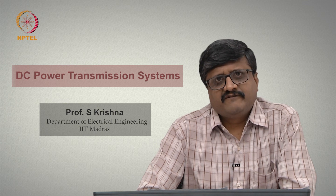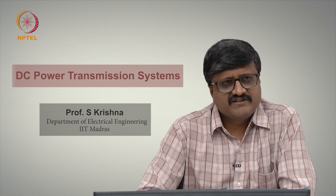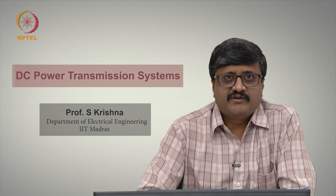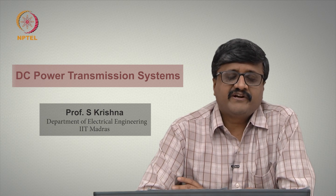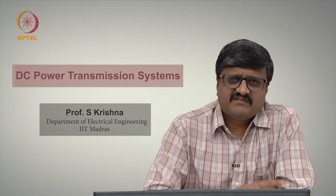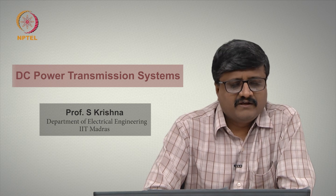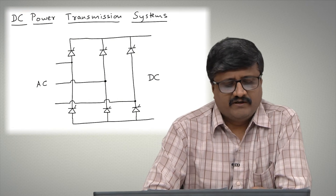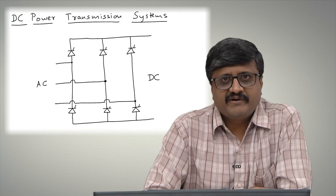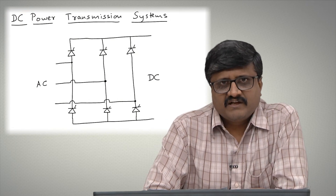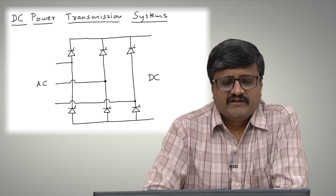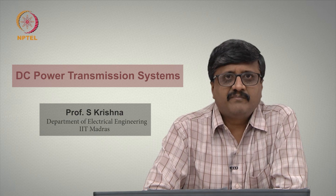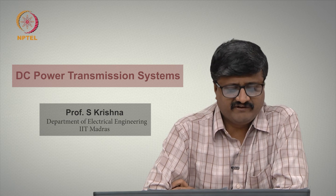The course will start with a general converter configuration and arrive at the familiar bridge circuit, or the 6 pulse line commutated converter. The 6 pulse line commutated converter will be analyzed in detail. This is the circuit of the 6 pulse line commutated converter, which is actually the building block of the 12 pulse line commutated converter, which is normally used and has some advantages over the 6 pulse converter.